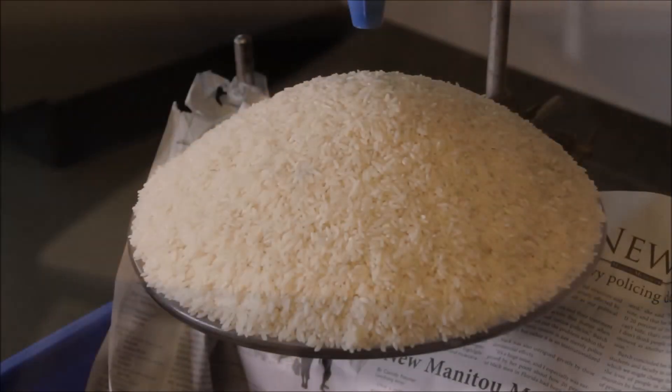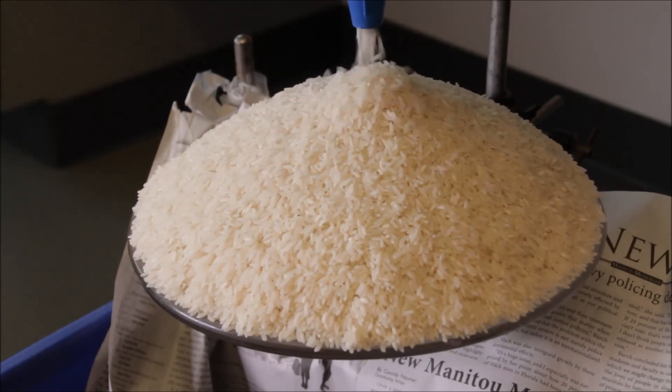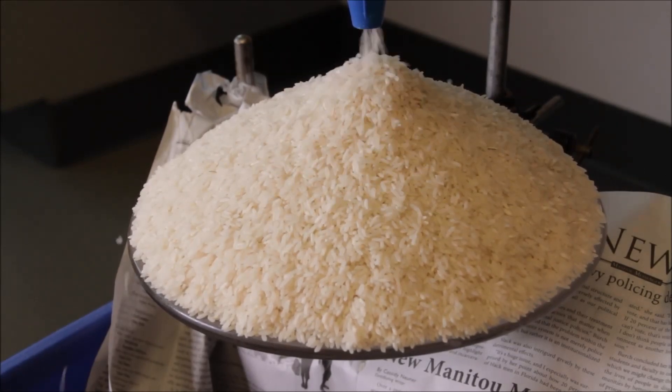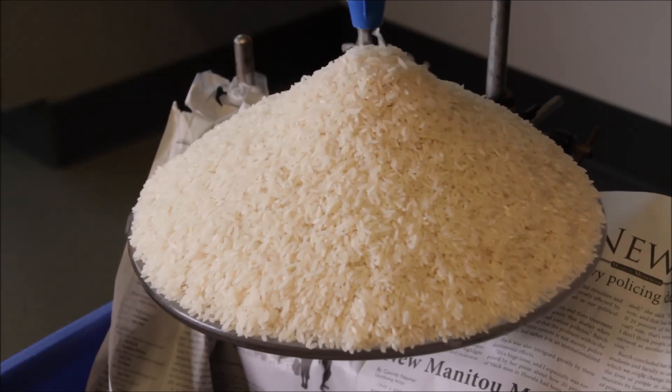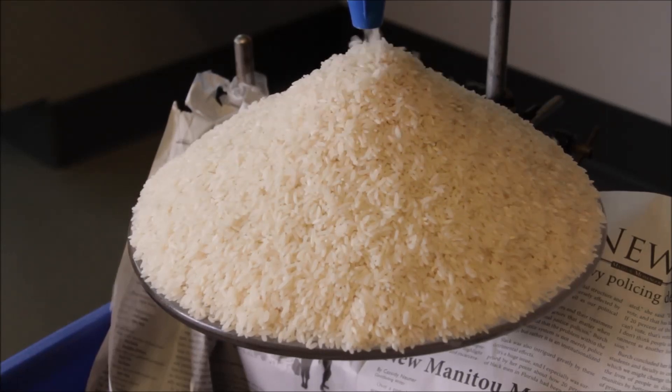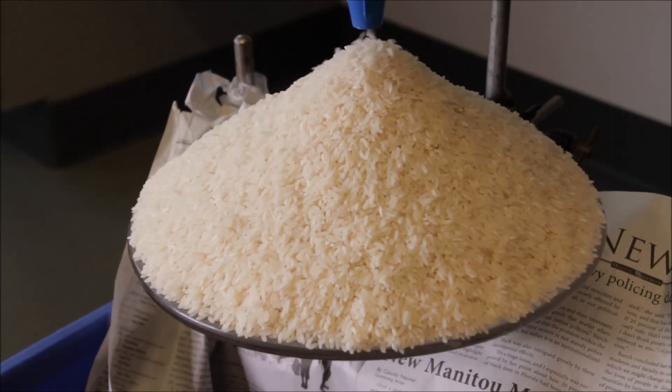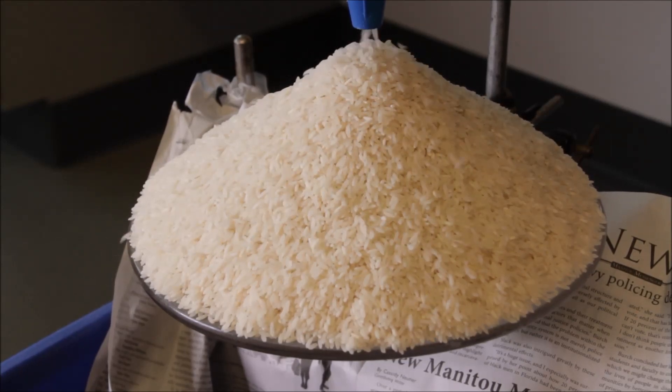After finding that physical sand piles do not observe the features of self-organized criticality, experimentalists began taking trials with different granular media. The mass density of a rice grain is smaller than the mass density of a sand grain. One could therefore expect inertial effects to be of less significance to rice grain dynamics.